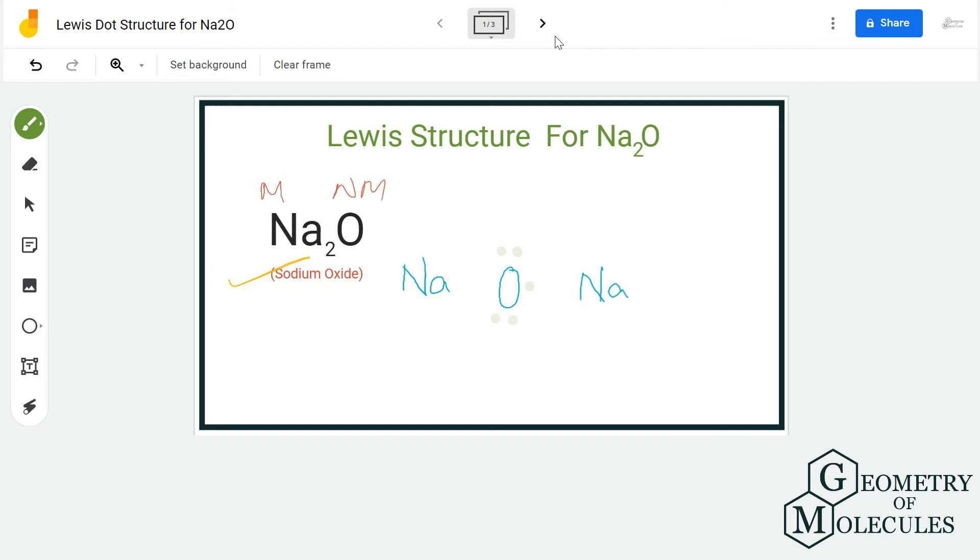Each sodium atom has one valence electron in its outer shell, and as there are two sodium atoms over here, I'm going to place both on the sides of the oxygen atom and I'm also going to place one electron around it.